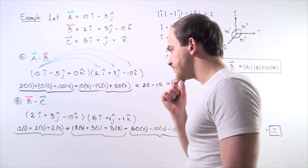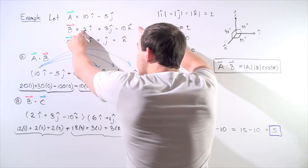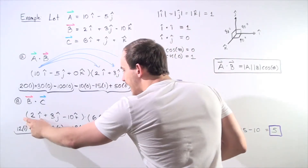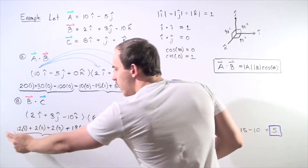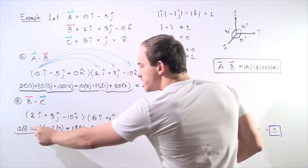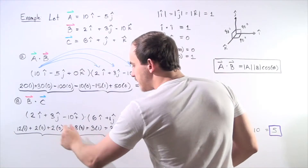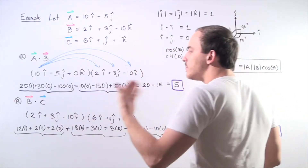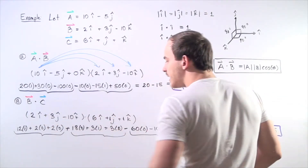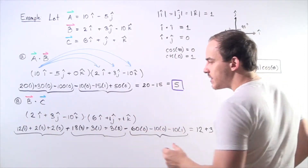Now let's move on to Part B. Once again, we take vector B dot product vector C and follow the same exact procedure. We have 2 I hat dot 6 I hat, giving 12 times 1. We have 2 I hat and 1 J hat, giving 2 times 0. We have 2 I hat and 1 K hat, giving 2 times 0. We have 3 J hat and 6 I hat, giving 18 times 0. We have 3 J hat and 1 J hat, giving 3 times 1. And 3 J hat and 1 K hat gives 0.